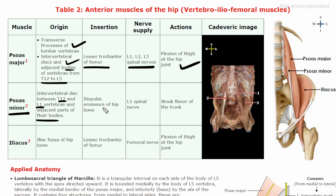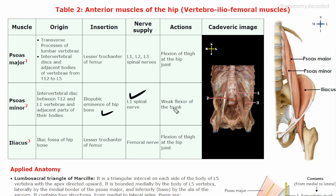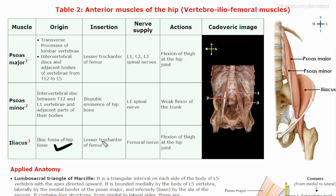Psoas minor: origin is the intervertebral disc between T12 and L1 and the adjacent parts of their bodies. Insertion is at the iliopubic eminence — an elevation on the medial border of the ileum between the ileum and the pubis. Nerve supply is L1 spinal nerve. It is a weak flexor and is often absent. Iliacus: origin is the iliac fossa of the hip bone; insertion is also the lesser trochanter. Psoas major and iliacus unite and are together referred to as iliopsoas. Nerve supply of iliacus is the femoral nerve; action is flexion of the thigh at the hip joint.